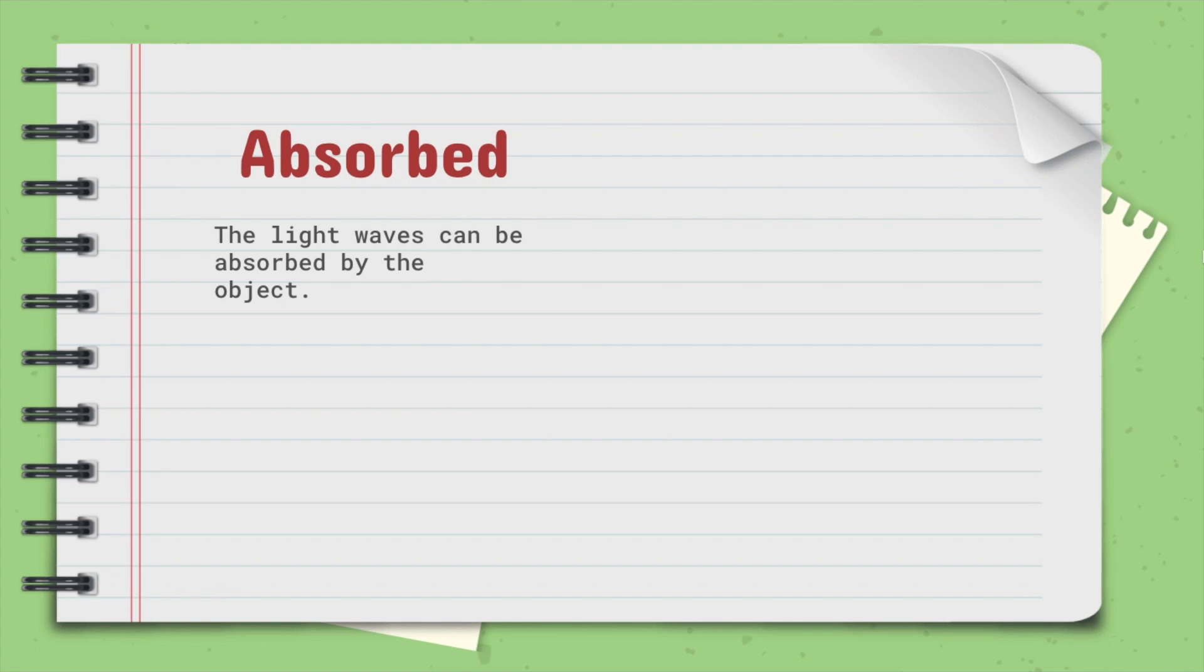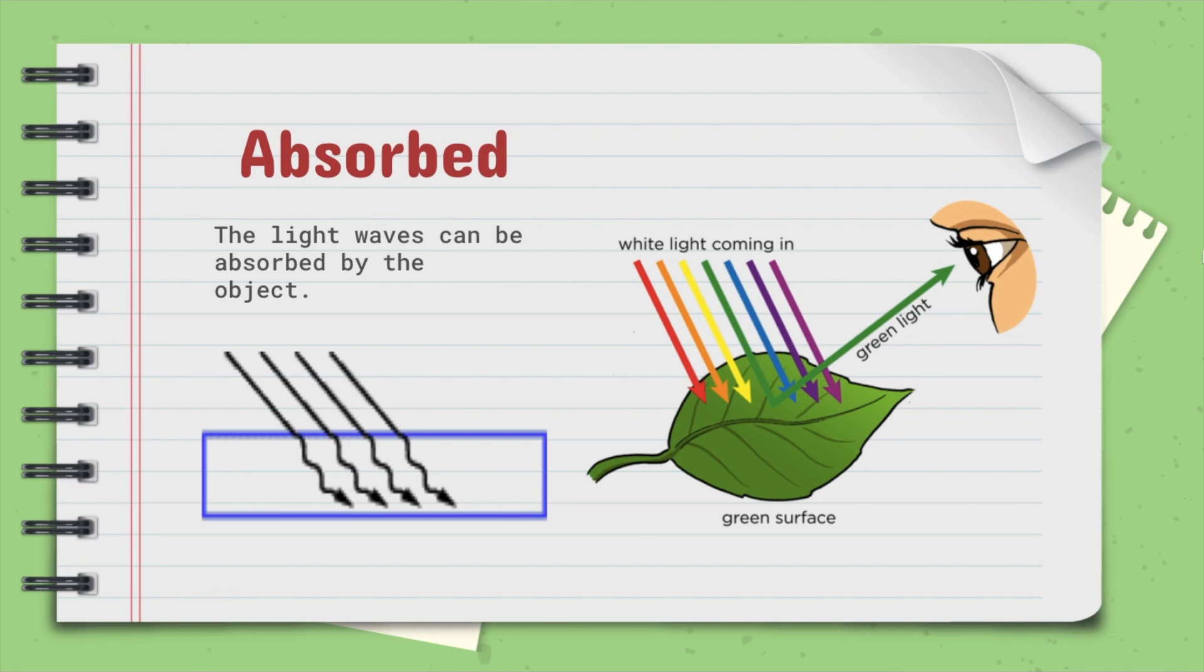The light waves can also be absorbed by the object. Like this diagram. An example of that would be white light coming in from the sun hitting a plant and its leaves. Most of those waves are absorbed by that leaf except green light. It's reflected back. And that's why a leaf looks green.